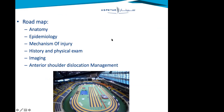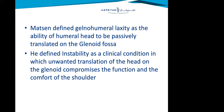The roadmap for our presentation today: we'll talk about anatomy, epidemiology, mechanism of injury, assessment of patients with anterior shoulder dislocation — whether primary, emergency, on the field, or in a clinic — imaging, and finally the decision on treatment. Before talking about pathology, we need to know the definition of shoulder instability and the difference between instability and laxity. Matsen in 1990 defined glenohumeral laxity as the ability of the humeral head to be passively translated on the glenoid fossa — this laxity is not a pathology by itself. Instability was defined as a clinical condition in which unwanted translation of the head on the glenoid compromises the function and comfort of the shoulder.